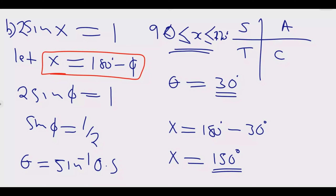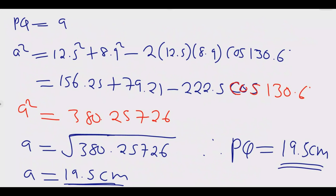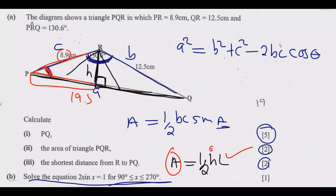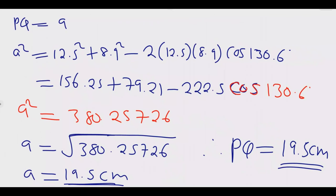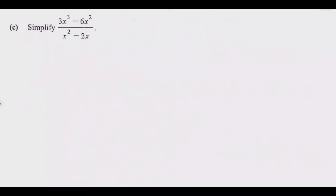The value 150 degrees satisfies the condition 90 ≤ x ≤ 270 degrees. The other possible answer, 30 degrees, falls outside this interval, so it is excluded. Therefore the only solution is x equals 150 degrees. Without the restriction, we would have had two answers: 30 and 150 degrees.